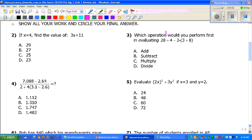Which operation would you perform first in evaluating 28 divided by 4 minus 2 times parentheses 3 plus 8? So when we're doing this, we need to remember order of operations. The P stands for parentheses. Now that's not one of our options, so what is inside the parentheses that we need to do? And that is add.